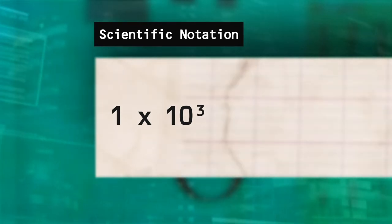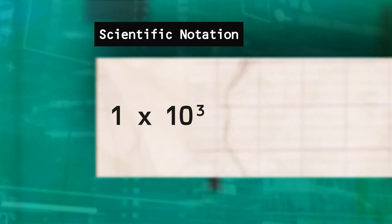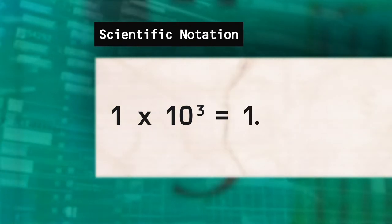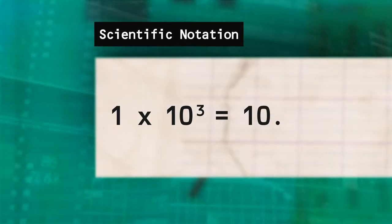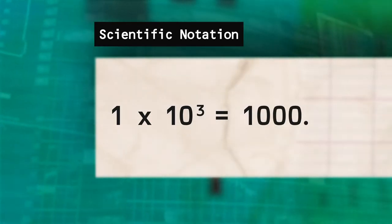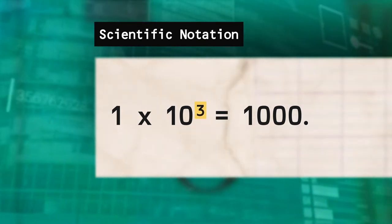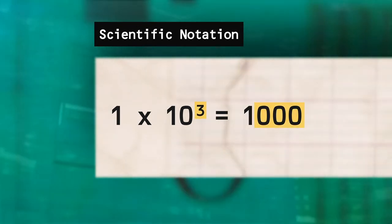For example, 1 times 10 to the third power means that you would move the decimal point three places to the right, adding zeros as we go. Starting with 1, going to 10, then 100, finally 1000. So, 1 times 10 to the third power is equal to 1000.